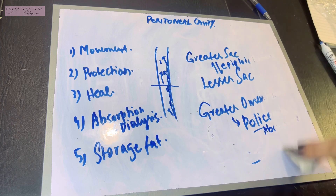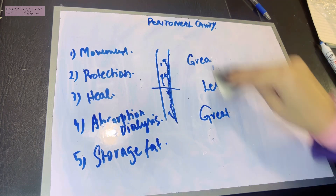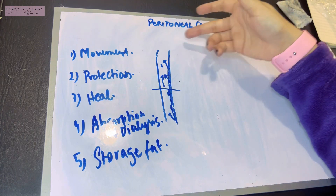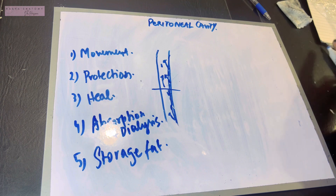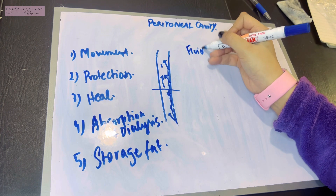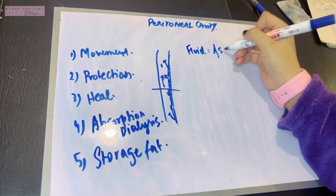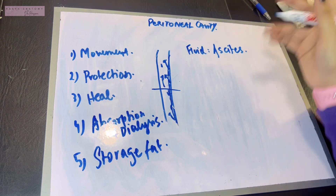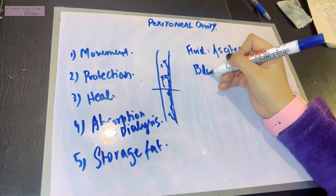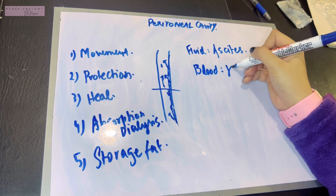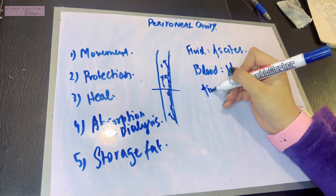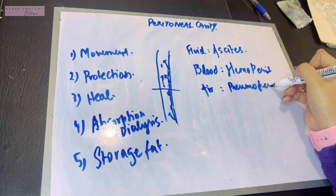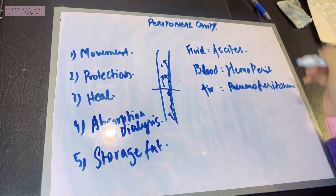Now let's discuss the clinical aspects of the peritoneal cavity. The first clinical condition is when there is abnormal material present in the peritoneal cavity. Whenever there is any fluid in the peritoneal cavity it is known as ascites. If this fluid happens to be blood, it is known as hemoperitoneum, whereas if the constituent is air, it is known as pneumoperitoneum.